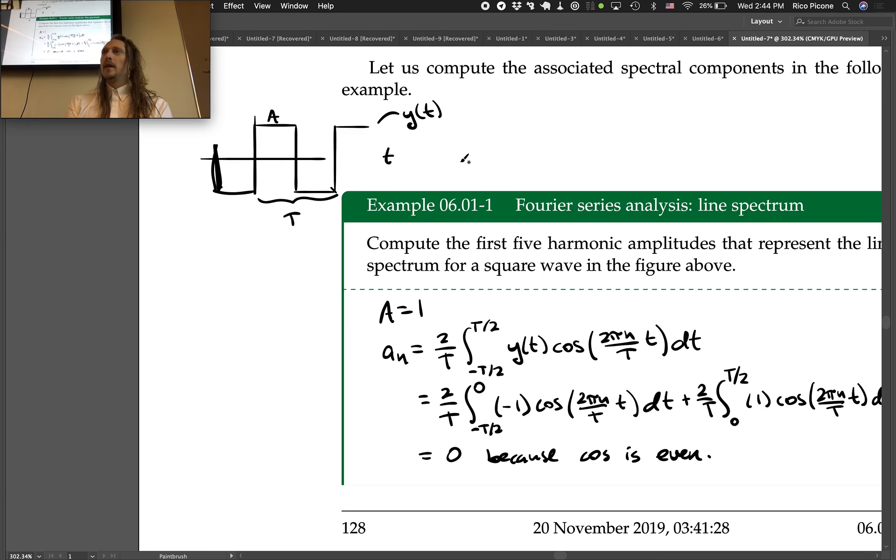Similarly, if you integrate, or if you do the Fourier series of an even function, all the bns will be 0. So that's a little shortcut. That always happens.